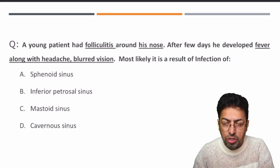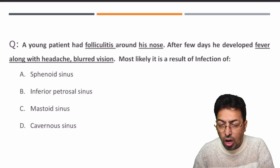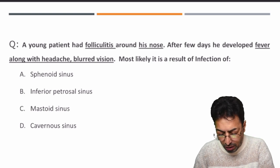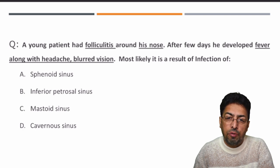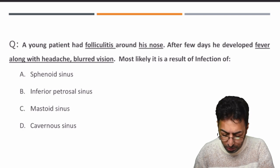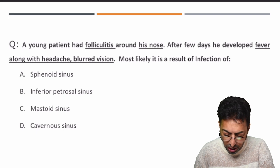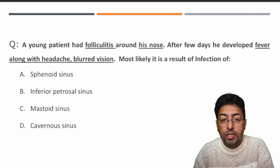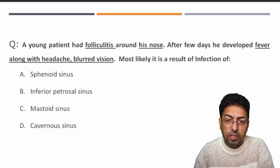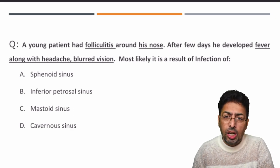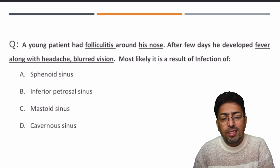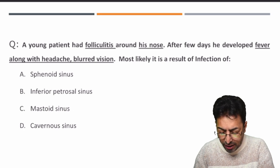The question states: a young patient had folliculitis around his nose. After a few days, he developed fever along with headache and blurred vision. Most likely it is a result of infection of which structure? The options given are sphenoid sinus, inferior petrosal sinus, mastoid sinus, and cavernous sinus. This is a relatively easy question.